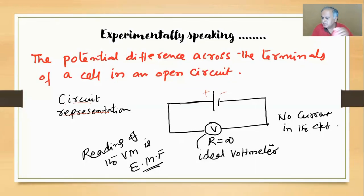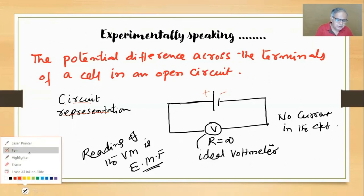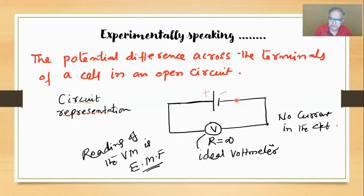If a figure is given like this and somebody asks you what is the voltmeter reading, you'll say it is EMF. The reading of the voltmeter is EMF. Here no current is going through the circuit.